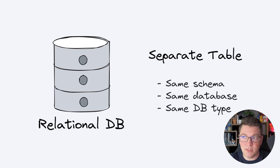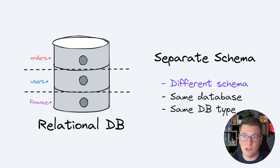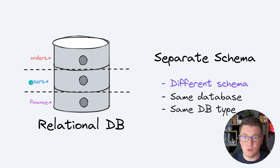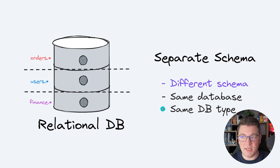The reason you want to isolate data for each module is again to prevent tight coupling. The next level of data isolation is using a separate schema for your modules. So in this case we use a different schema for each module — for example, I have the orders module, the users module, and the finance module inside of the same physical database, still using a relational database.